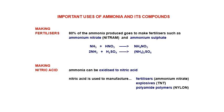Ammonia is used to make fertilisers, including ammonium sulphate, and can be oxidised to make nitric acid. Nitric acid is used in the manufacture of fertilisers, explosives, and polyamide polymers.